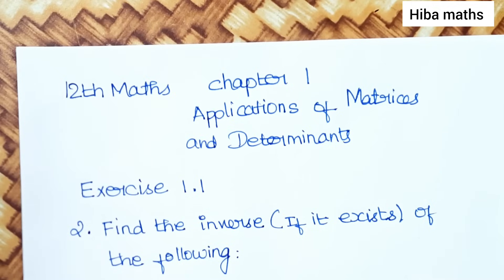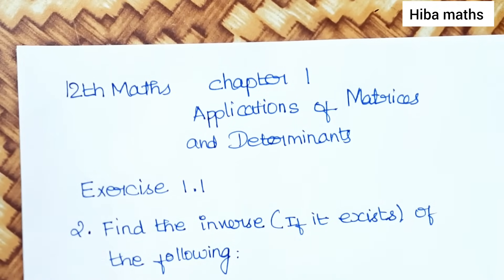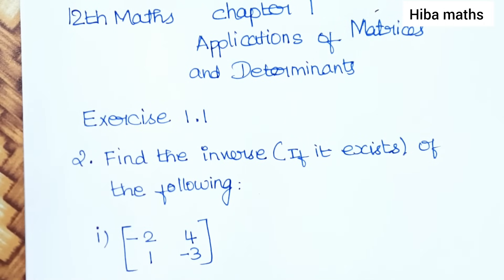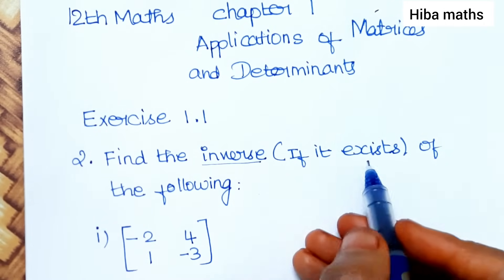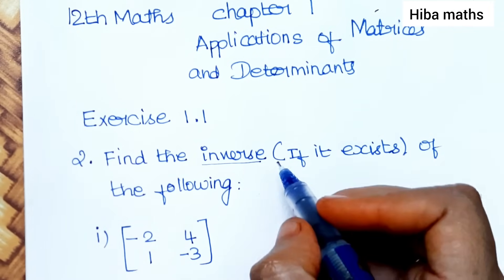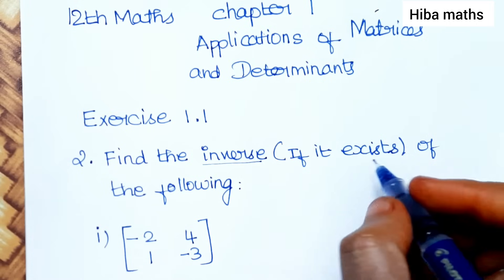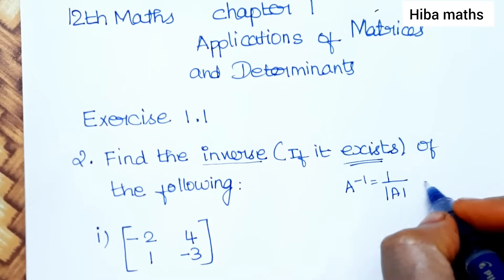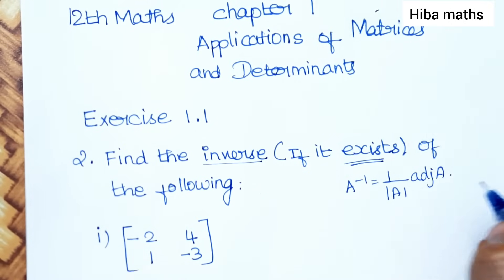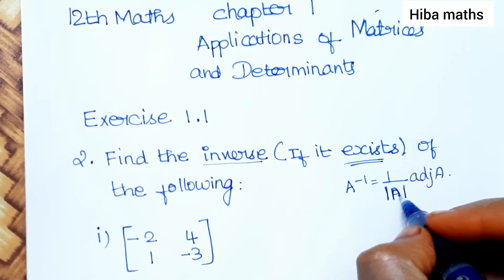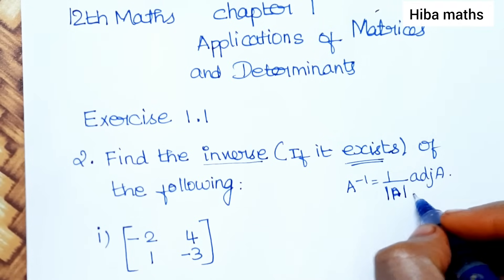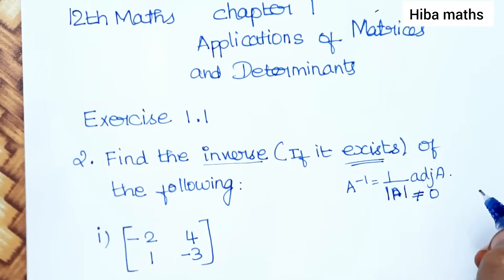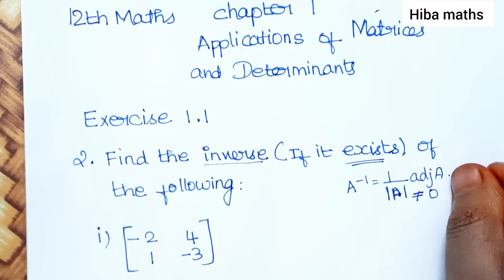Hello students, welcome to Hibamaxx 12th standard, Chapter 1: Applications of Matrices and Determinants, Exercise 1.1, second question. We need to find the inverse if it exists of the following matrices. The formula is: A inverse equals 1 by modulus of A, into adjoint of A. If the modulus of A is not equal to zero, we can solve the inverse.